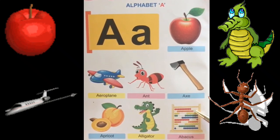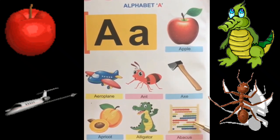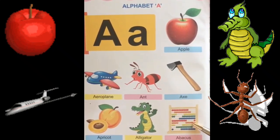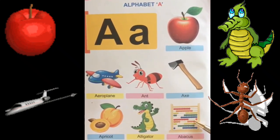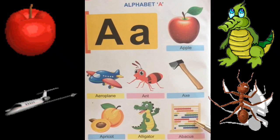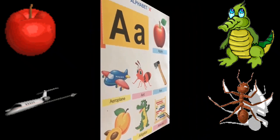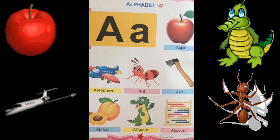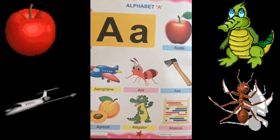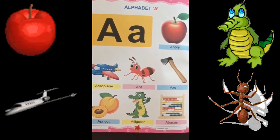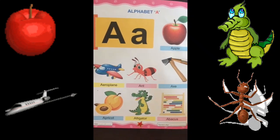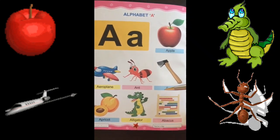Abacus. Abacus is an instrument. It is used in maths calculation. So today we have learned picture identification of alphabet A.